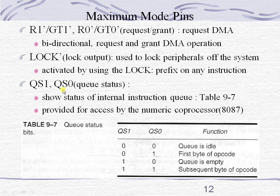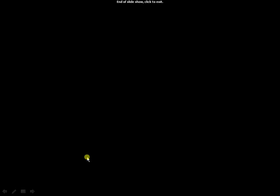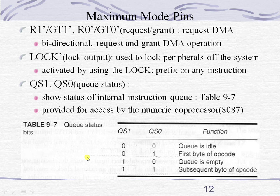QS1 and QS0 are two pins representing the status of the instruction byte queue. If these bits are 00, the queue is idle. 01 means the first byte of opcode is present in the queue. 10 means the queue is empty. 11 means there is a subsequent byte of opcode present in the instruction queue. These are the pins of the 8086 microprocessor, and remaining topics will be discussed in the later session.